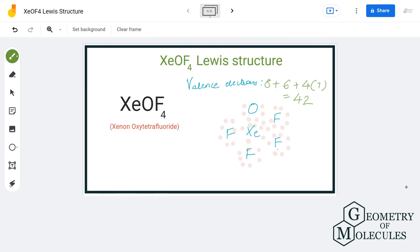Now if you calculate the formal charges, you will get a formal charge of zero for all the atoms. Hence, this is the Lewis structure of XeOF4, in which xenon forms a double bond with the oxygen atom and single bonds with four fluorine atoms.